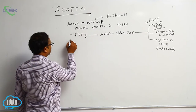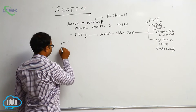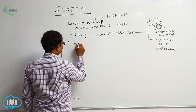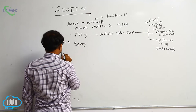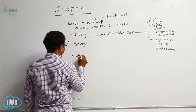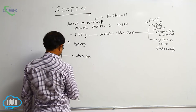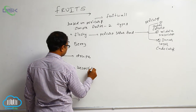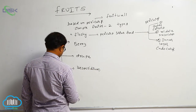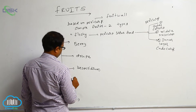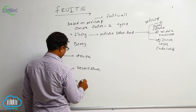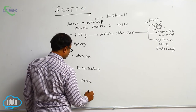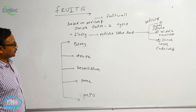Fleshy fruits are again divided into five types: first is berry, second is drupe, third is hesperidium, fourth is pome, and fifth is pepo — totally five types of fleshy fruits.